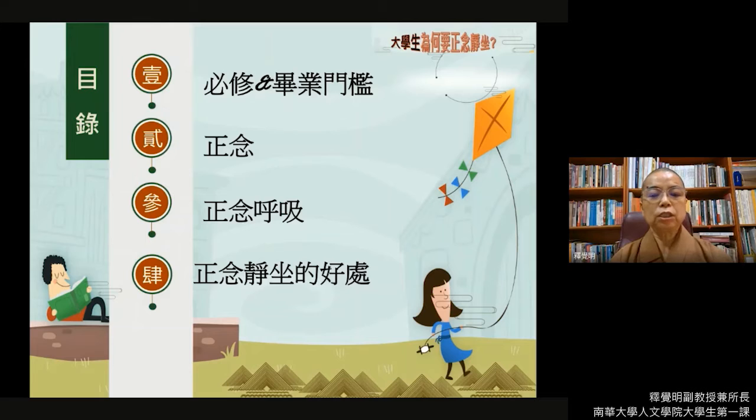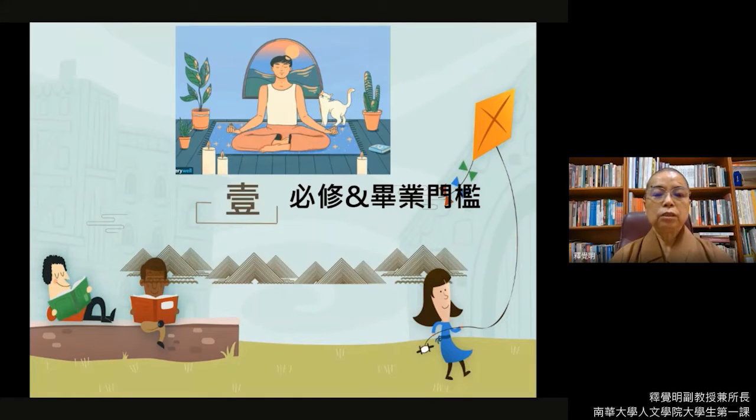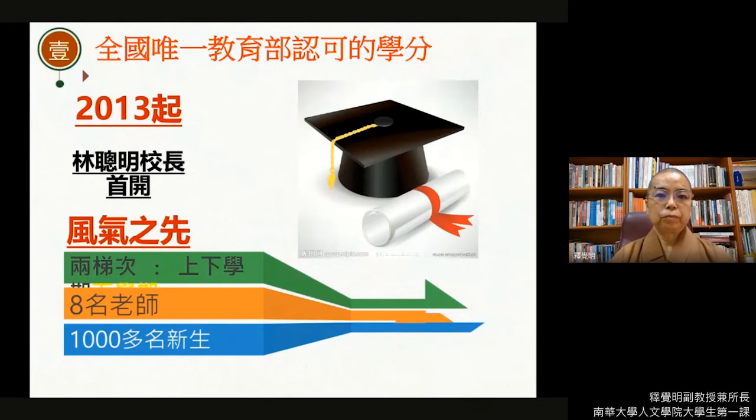为什么我们在南华大学要将这一个课程、将这个正念静坐列入为正式的学分课程，必修以及毕业门槛？2012年林聪明校长接任南华大学的大家长，那么在2013年，他就首开了全国大专院校的风气之先，他将正念静坐导入了大学的教育，很重要的生命教育，以及成为南华大学的办学的特色。